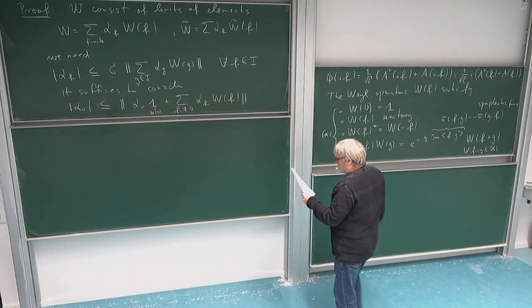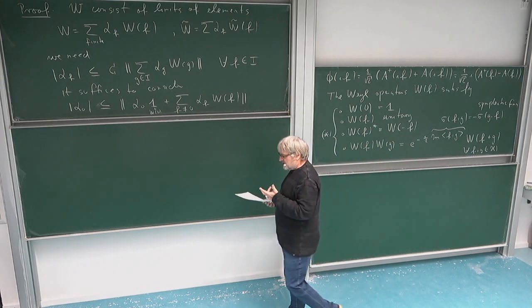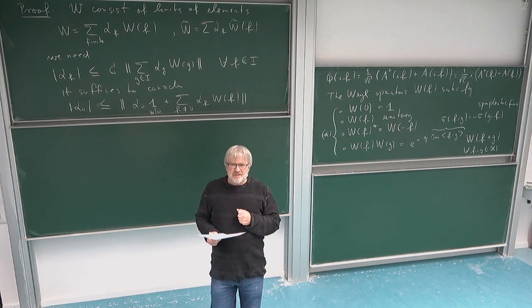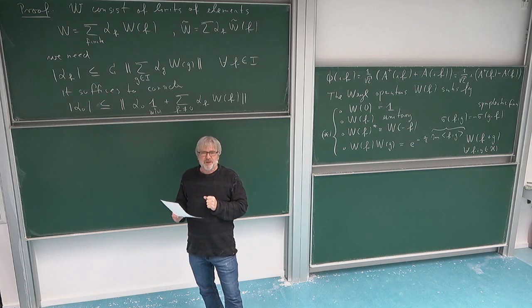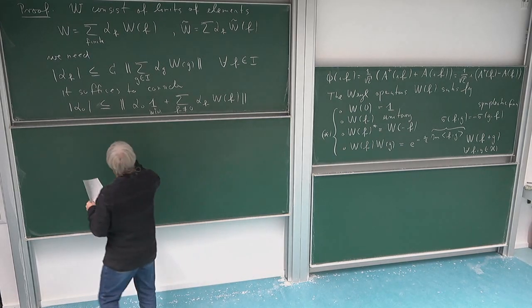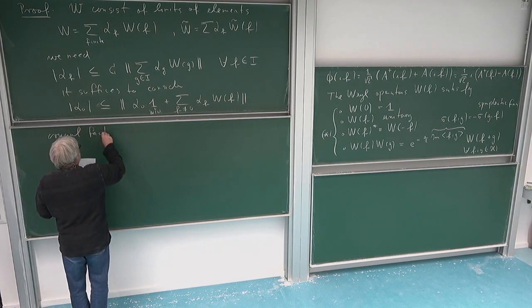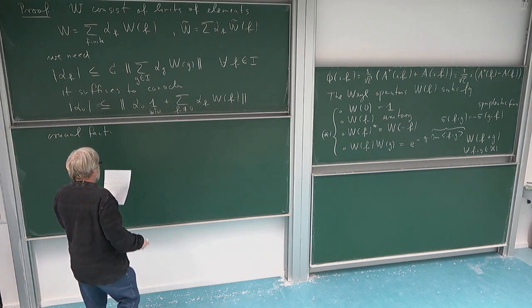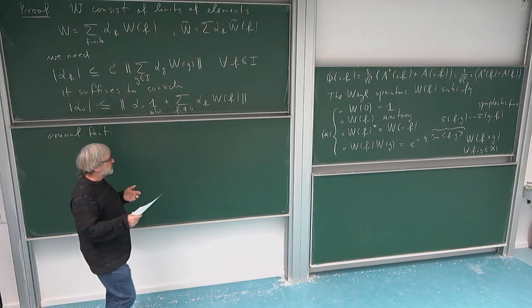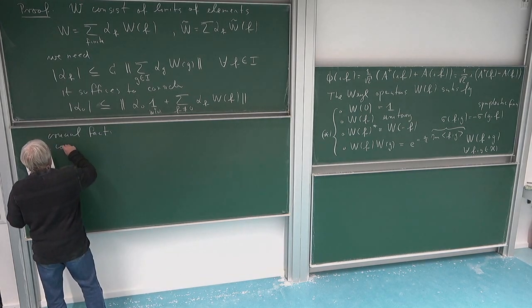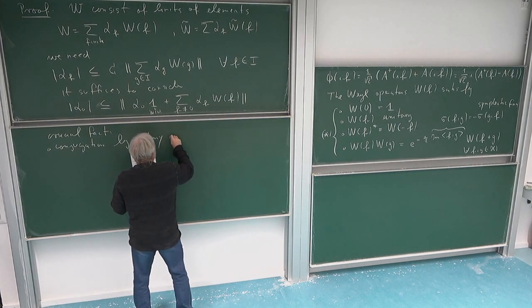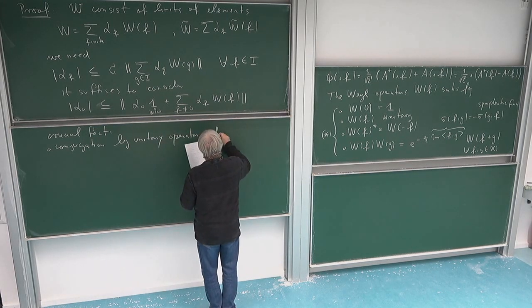The crucial observation is that I have to make statements about the norm using only algebraic relations, but I'm on a Hilbert space with norms of operators. I know that if I conjugate an operator by a unitary operator, then this does not change the norm. That's the crucial fact which allows us to address this problem — it's not clear how to go from algebraic relations to the norm, but conjugation by unitaries preserves the norm.